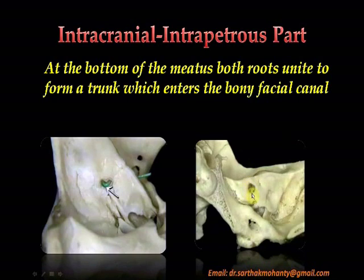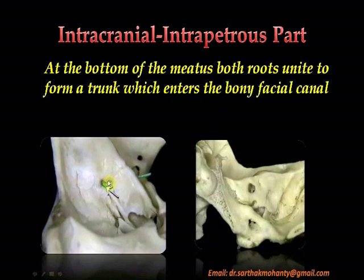This is the internal acoustic meatus and here lies the opening of the facial canal inside it. The facial nerve — represented by this wire in the diagram — enters the internal acoustic meatus, and here lies the facial canal. This whole part is the internal acoustic meatus, and this is where it enters the facial canal.